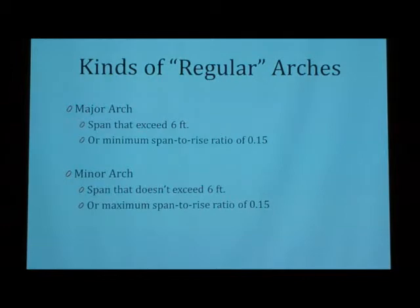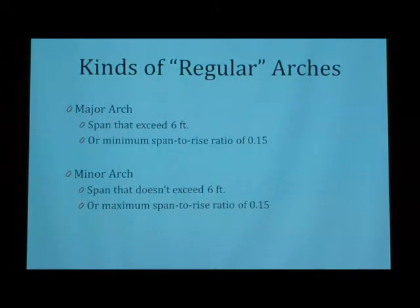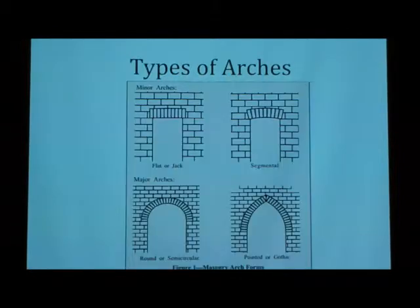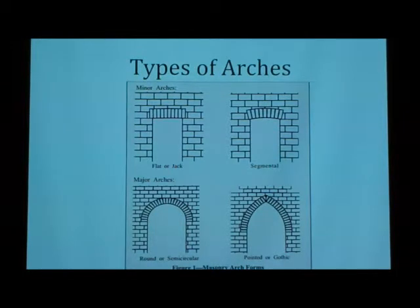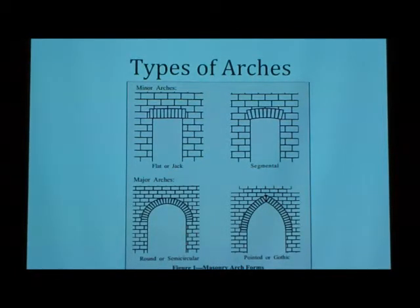So, now we're going to move on to the regular arches, the vertical arches. Basically, there are two different kinds — you have major arches and minor arches. The length and their span-to-rise ratio differ; minor arches are essentially smaller, which is what I'm going to be talking about today. You have tons of different types — here's just a few pictures of the ones I found. You have flat, or jack, arches; segmental arches; semicircular; and then Gothic arches.